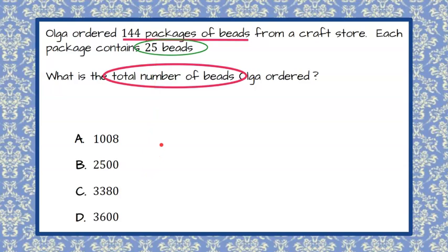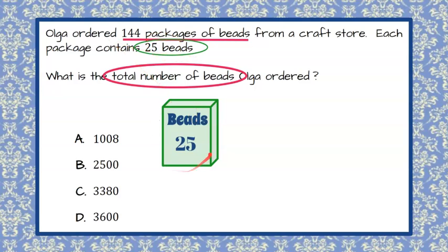So if you've been at the Magic of Math before, you know I love to draw a picture. So here is one box of beads, and this one box of beads, or one package of beads, has 25 beads in it. I got that from the problem. Now Olga has not just one of these. She ordered 144 of these. So 144 times the 25 beads in each box will tell us how many beads she has all together.